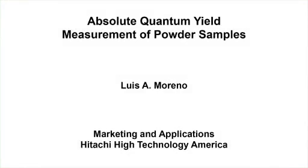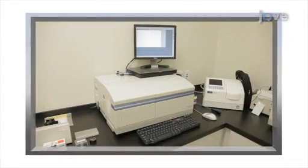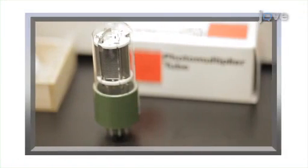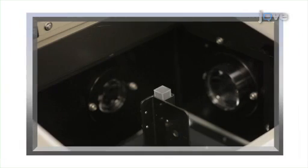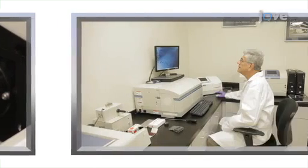The overall goal of this procedure is to measure absolute quantum yield of powder samples using a calibrated Hitachi F7000 fluorescence spectrophotometer. The first step of the procedure is to collect the integrating sphere correction factors to account for the reflectivity of the integrating sphere used for the measurements.